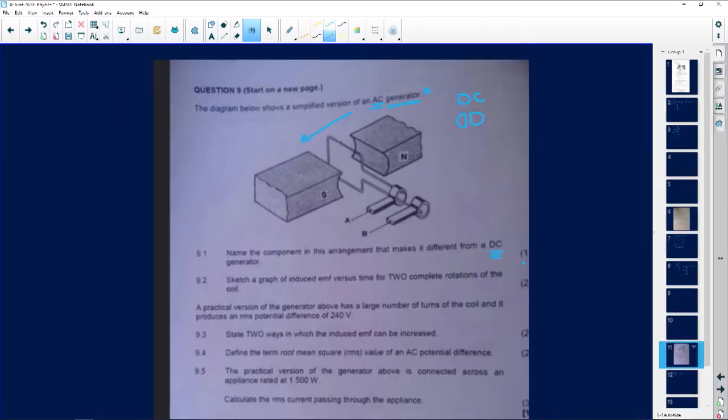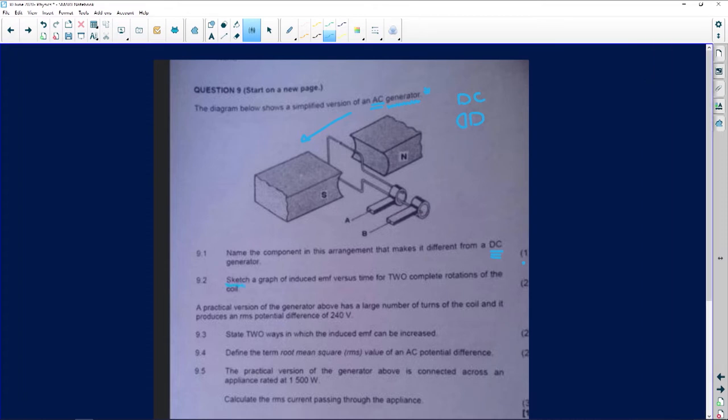So let's look at 9.2. We need to sketch a graph of induced EMF versus time. So they're telling us induced EMF and time. This will be on the horizontal plane, this will be on the vertical plane. So versus time for two complete rotations of the coil. Now I want us to go back with what I said in the previous question. When we talk about a rotation, a complete rotation or revolution, it must give you one circle in technicality. When we talk about alternating, it must form an S, think of a sine graph. When we talk about DC, it will form those two humps.